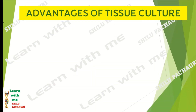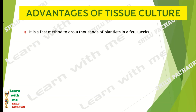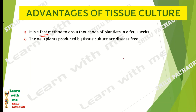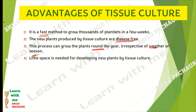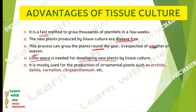The advantages of tissue culture are: first, it is a fast method — thousands of plantlets can be grown in a few weeks from a single cell. Second, new plants produced by tissue culture are disease-free because they are grown in a controlled, disease-free laboratory environment. Third, plants can be grown round the year regardless of season or weather. Fourth, very little space is needed for developing new plants. It is mostly used for the production of ornamental plants.